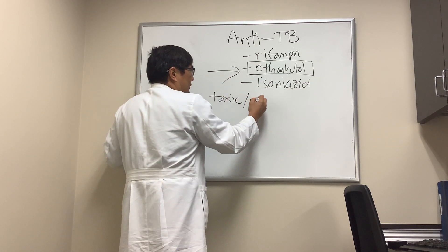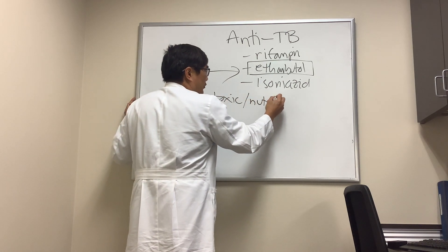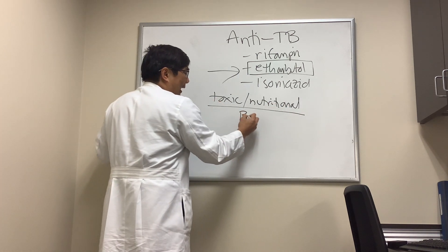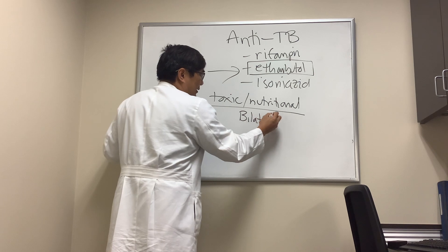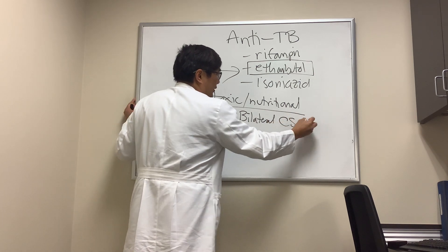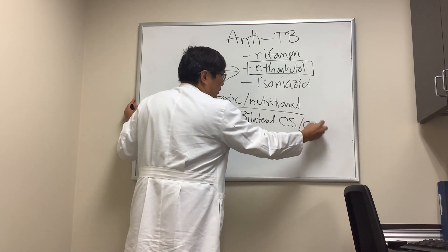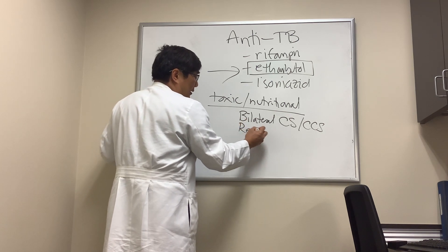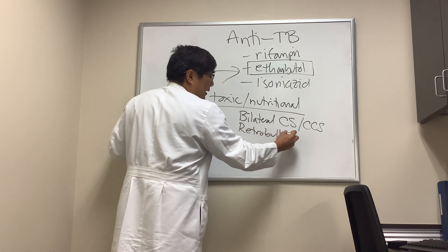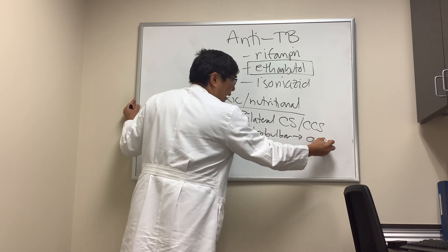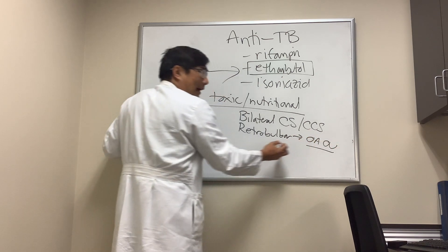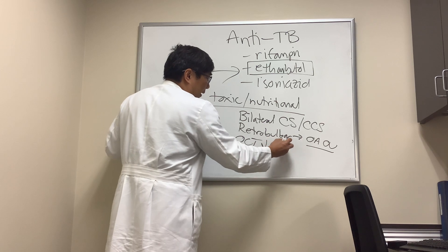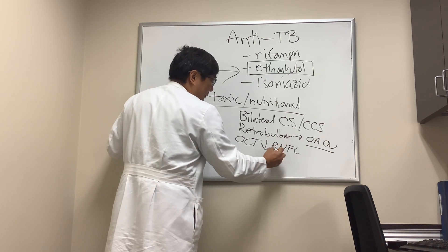As with any toxic or nutritional optic neuropathy, it presents in a very specific way: bilateral, painless, progressive loss of vision with a central scotoma or cecocentral scotoma. Initially the nerve looks normal because it's thought to be a retrobulbar optic neuropathy, then the nerve will become pale — optic atrophy bilaterally — and OCT will show decreased nerve fiber layer and macular ganglion cell layer.